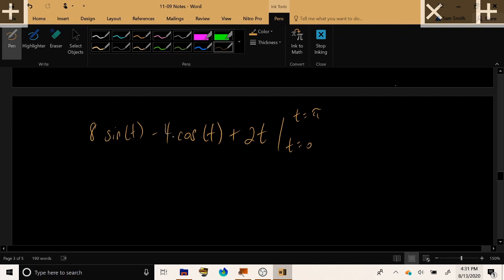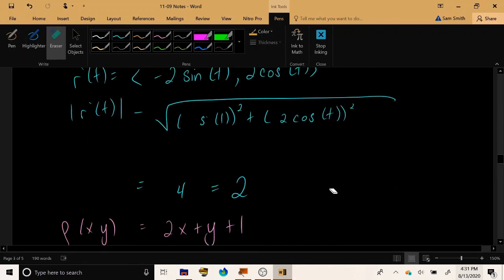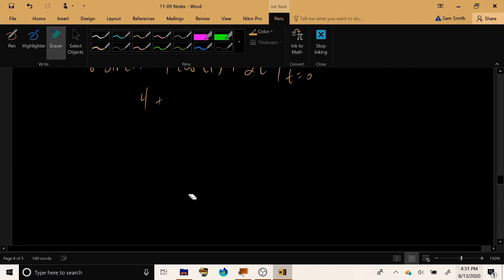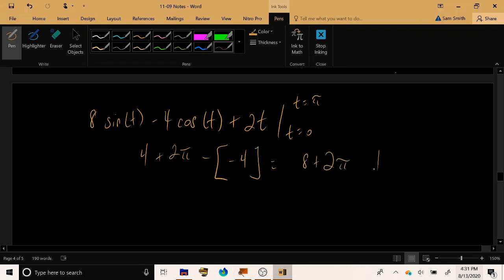Now, plug in t equals pi to sine. That term vanishes. Plug in t equals pi to cosine. We get negative 1. So, with the minus on negative 4, we get positive 1. Plus, 2 times pi. Then, plug in t equals 0. From sine, we get nothing. From cosine, we get positive 1. And so, let's take away negative 1. And let's take away nothing from the final t term. And we get 8 plus 2 pi, total mass.